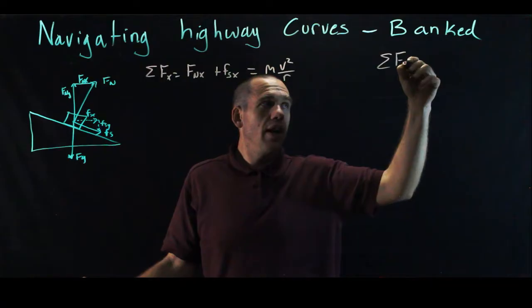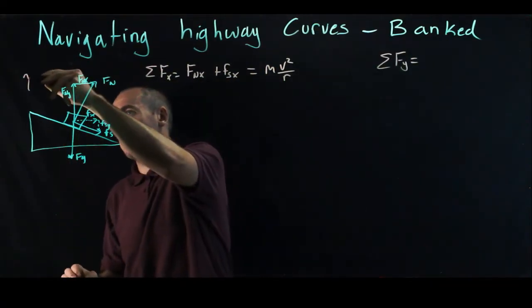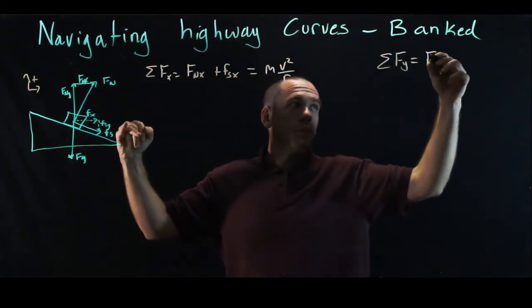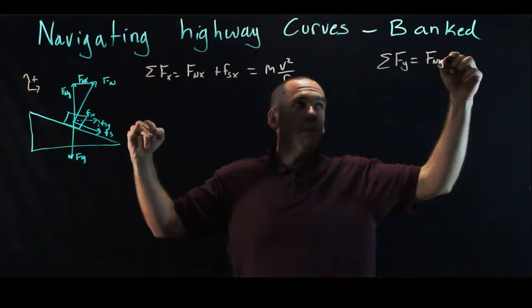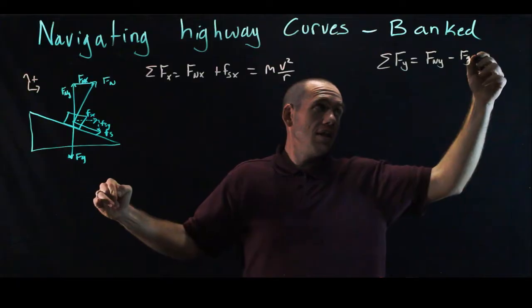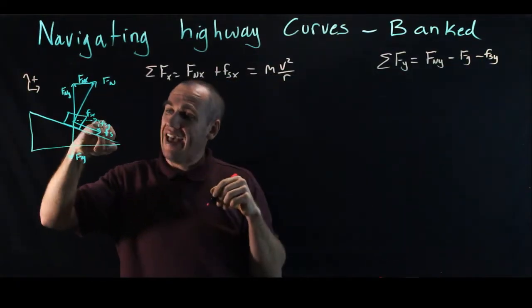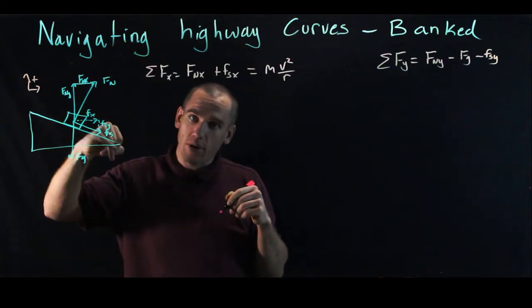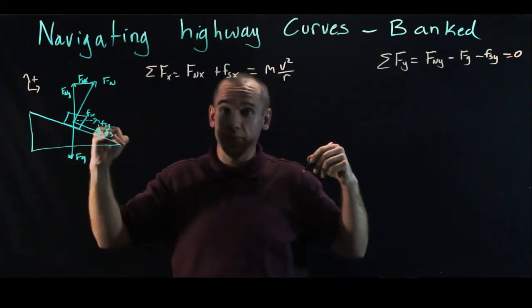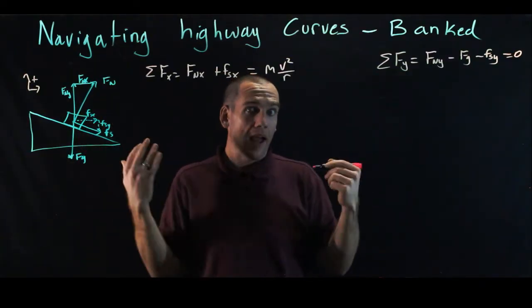The net force in the Y direction, and pay attention to which way is positive. I have up as positive. I have F_nY minus F_g, because F_g is down, minus F_sY because it is also down, because F_sY and F_sX have to add up to this vector that is down and right along the incline, and that is equal to zero. We don't want to accelerate up or down this incline. We don't want to drift. We want to stay in a straight path around that circle.